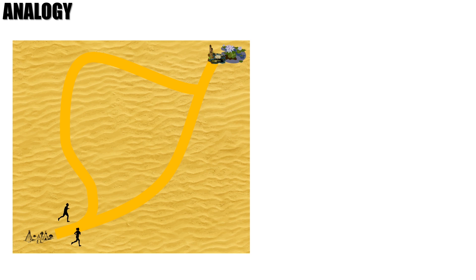To better understand stigmergy and finding the shortest path in an ant colony, let's start with an analogy. I like analogies because they help link new concepts to real-life experiences. We are going to assume that there is a small village in the middle of a desert with several families, and every day they have to travel several kilometers to bring water from a big pond.